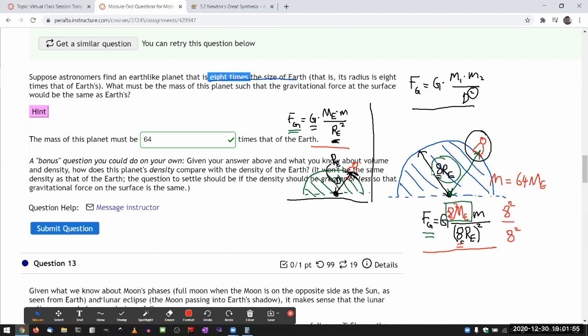So this planet, you could look at, it's radius is the radius of Earth plus seven times the radius of Earth. But that comparison won't really give you the meaningful result. What will give you the meaningful result is that this radius here is eight times the radius of the Earth.